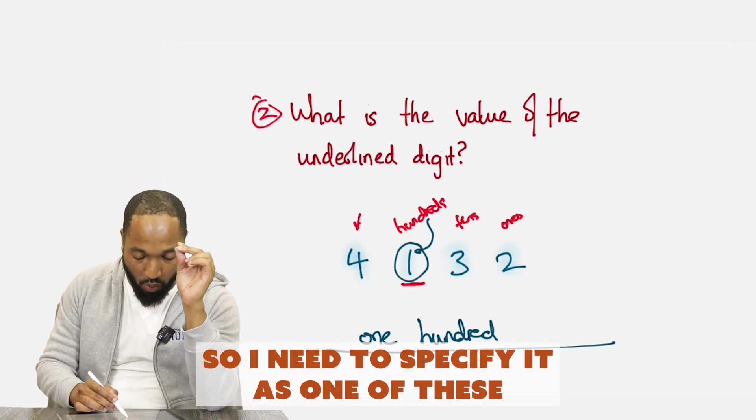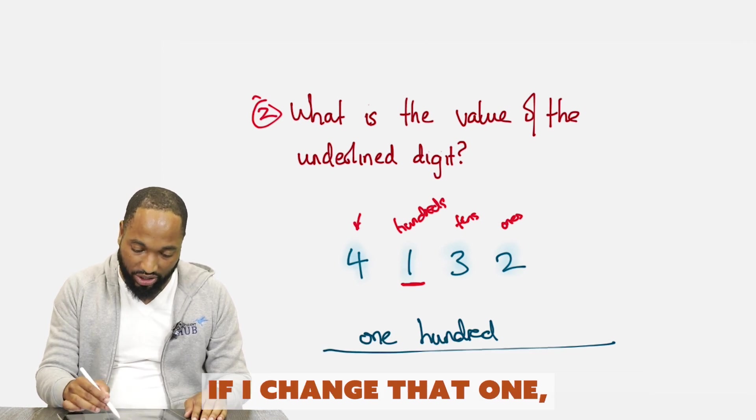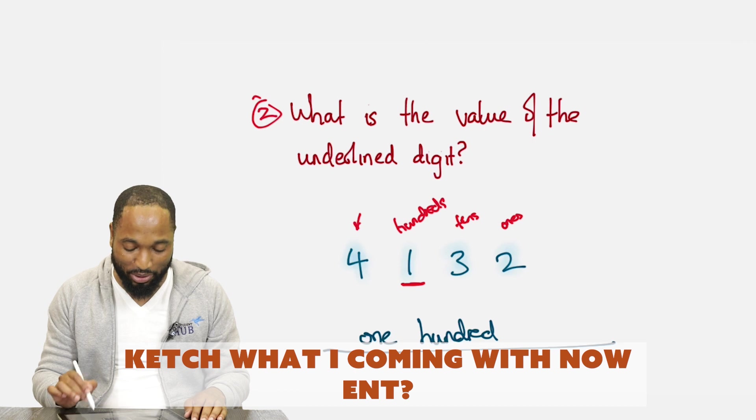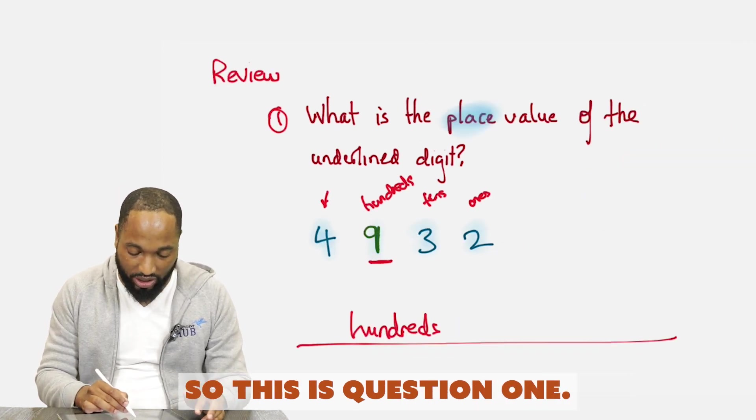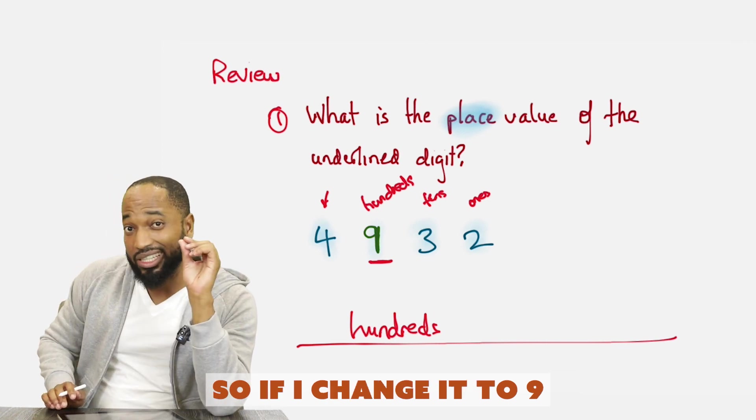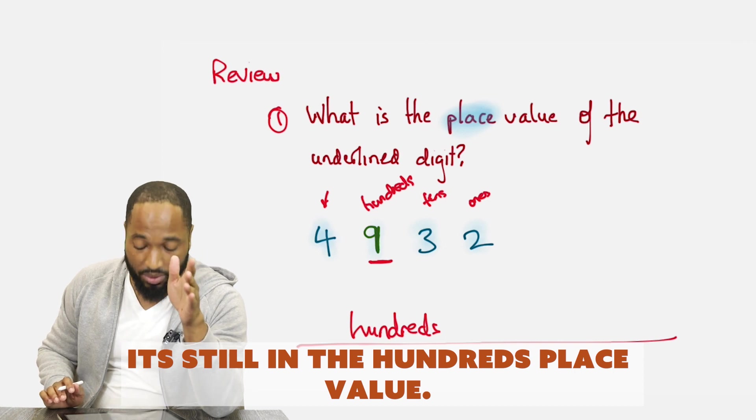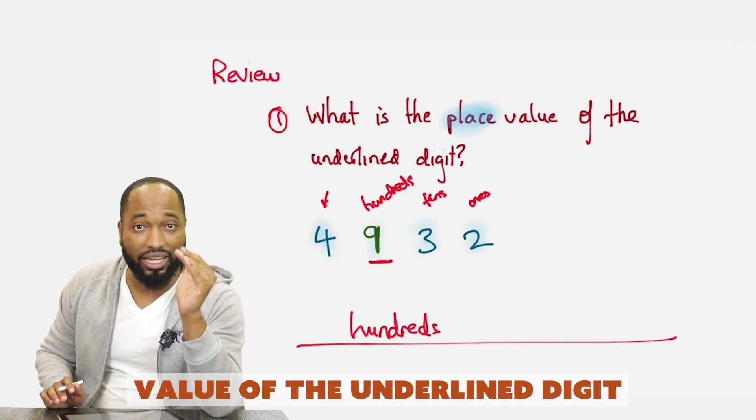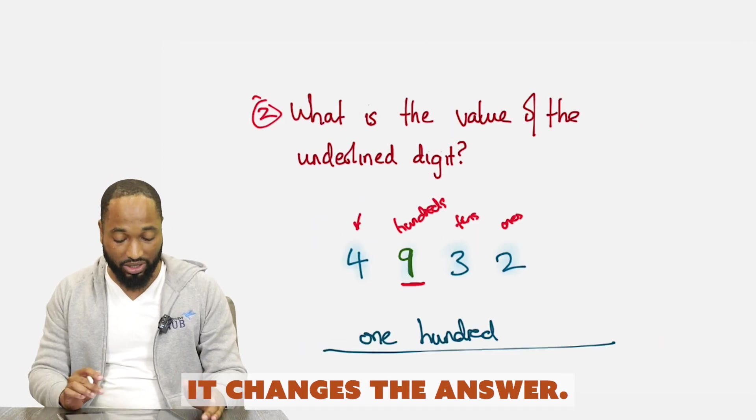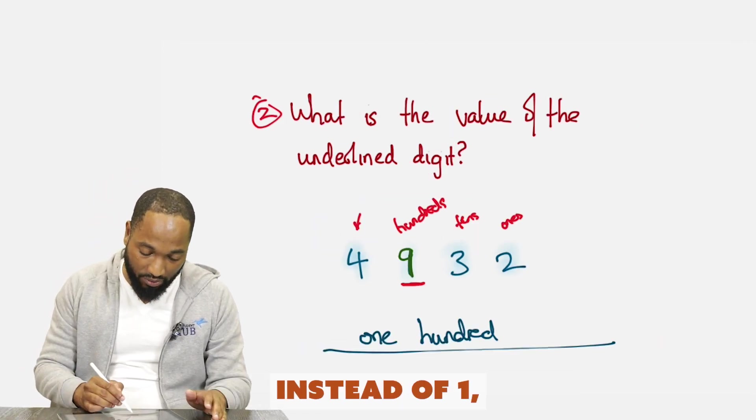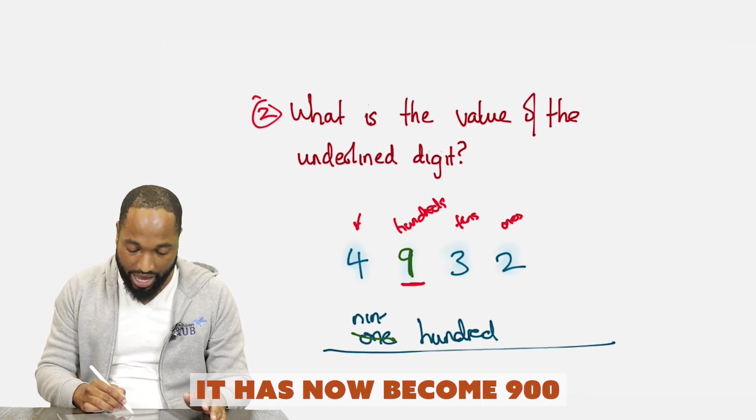So I need to specify that it's one of these. For example, if I change that one to nine earlier, and I change it to nine in the first question, nothing happens to my answer. It's still in the hundreds place value. So the place value of the underlying digit nine there is hundreds. But if I change it to nine in the second question, it changes the answer. Instead of one hundred, I will have to put not 100. It has now become 900.